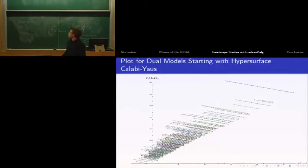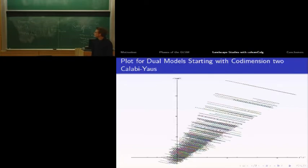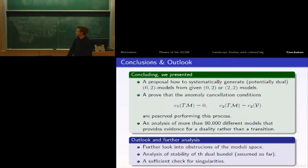When I plot this, we find something like that. This is for the hypersurface case. Each line corresponds to one class of models. Each dot on every line corresponds to a different model. Since the sum of those two Hodge numbers is constant, they're all parallel. This is the plot for the complete intersections - you can learn even less from that, but still nice.